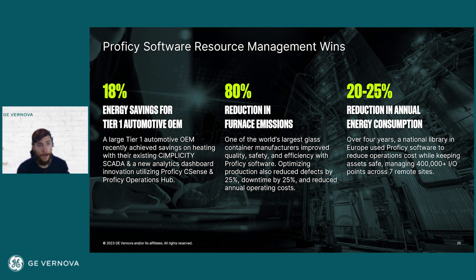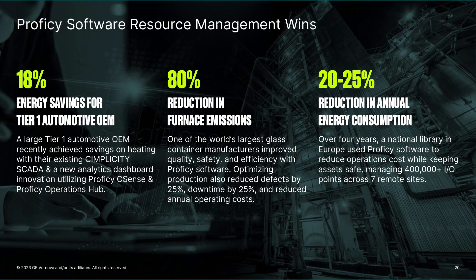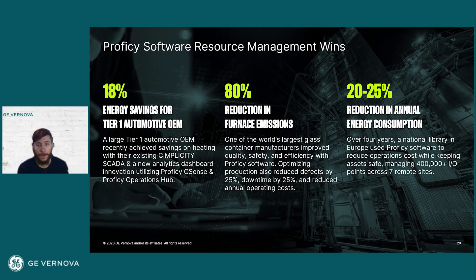Here we see some examples of Prophecy delivering resource management wins for our customers. Our products have enabled companies in a wide variety of industrial sectors to capture meaningful and multi-dimensional benefits. We've got examples of our products being used to capture energy consumption information, apply analytics to optimize HVAC systems, and ultimately lower energy spend. Manufacturers have achieved significant emissions savings by improving quality, improving efficiencies, and reducing downtime on production equipment. These results generate lasting returns that both improve their bottom lines and their environmental impact.